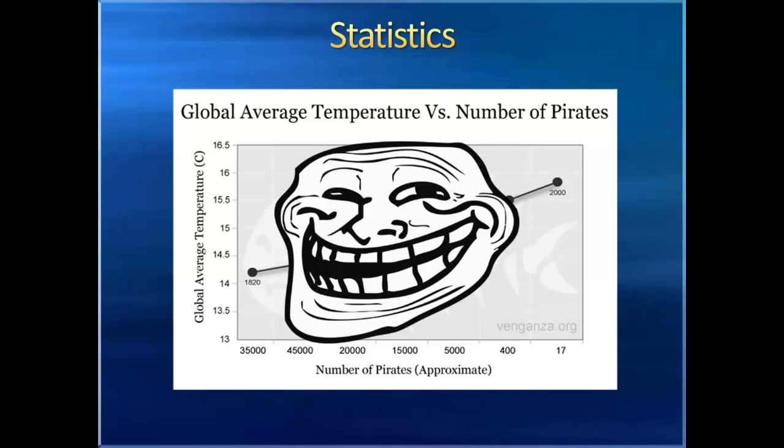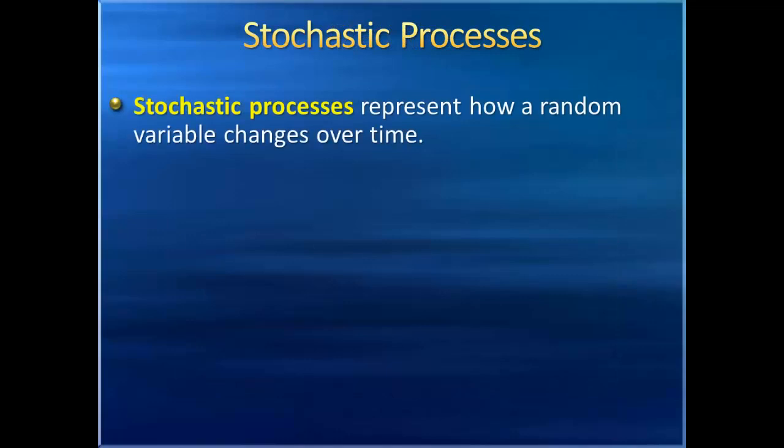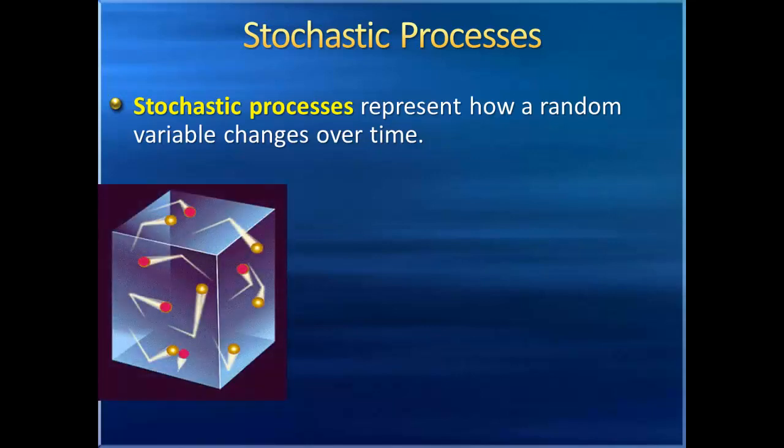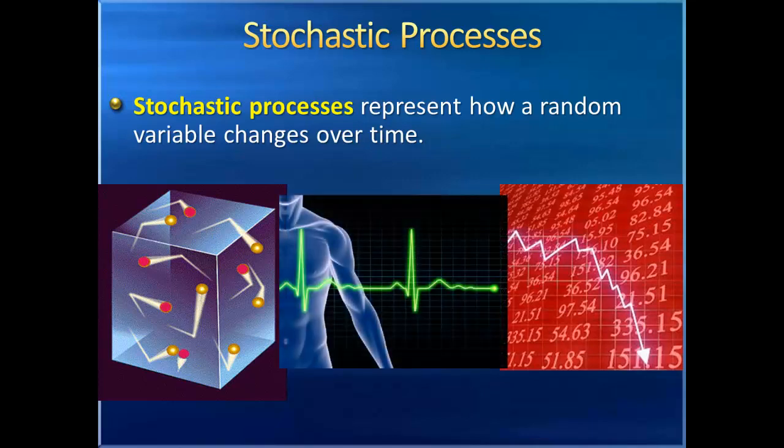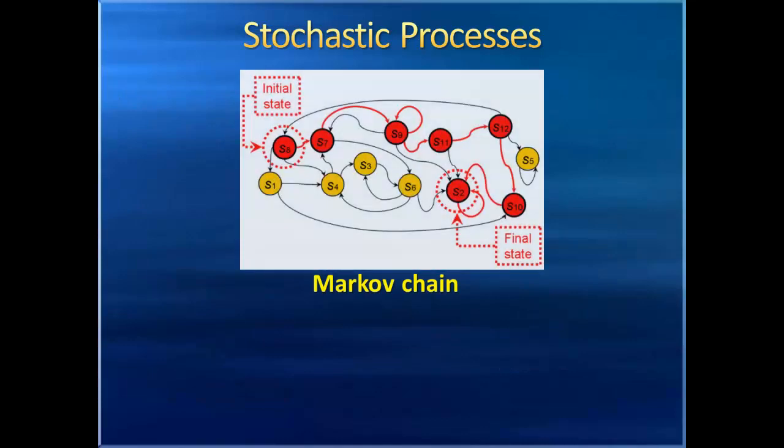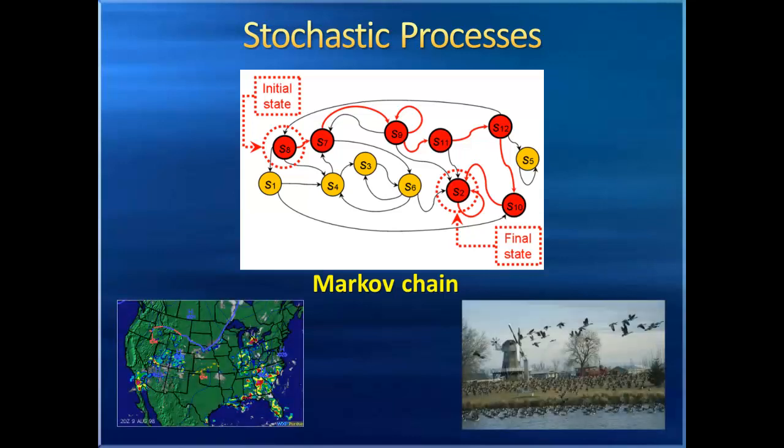There's a lot more we can do with an understanding of probability and random variables. We can study stochastic processes, which represent how a random variable changes over time, perfect for describing the random motion of gas particles, the rising and falling of the stock market, or the vital readings of a hospital patient. For example, we can analyze processes called Markov chains, using the tools of linear algebra to describe how a system may change between states with some sort of probability, perhaps to model changes in the weather, or migration of geese.